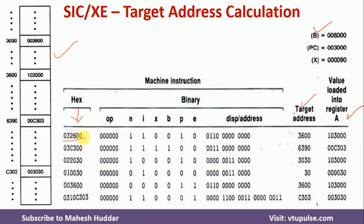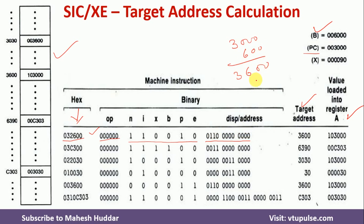For the first example, converting 032600 into binary: the first 6 bits are the opcode, the next 6 bits are the flags, and the last 12 bits are the displacement. E equals 0 means format 3, and P equals 1 with N and I both 1 means program counter relative addressing mode. Program counter value is 3000, adding displacement 600 gives target address 3600. The value at address 3600 is 10300. For the next example, 03C300 converts to binary showing E=0, B=1 — base relative with indexing. Base value 6000 plus index 90 plus displacement 300 gives target address 6390. The value present at 6390 is 00C303.